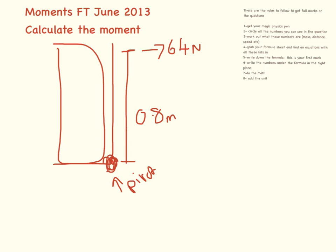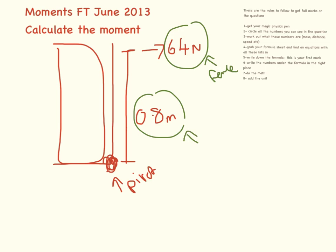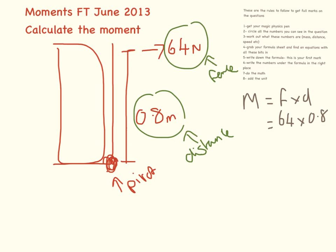So this is the first question that we have. Following the rules, I have my physics pen and I'm going to circle all of the numbers in the question and work out what they are. This one is in Newtons, so it must be force. This one is in meters, so it is distance. We write down the equation: moment equals force times distance. Plugging in the numbers: 64 Newtons times 0.8 meters. Popping that into the calculator gives an answer of 51.2 Newton meters.